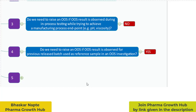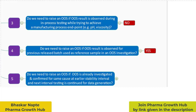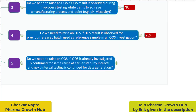Follow the OAS procedure and try to understand whether the OAS result is due to a lab error or not. Either way, you need to investigate the root cause through the out-of-specification procedure.